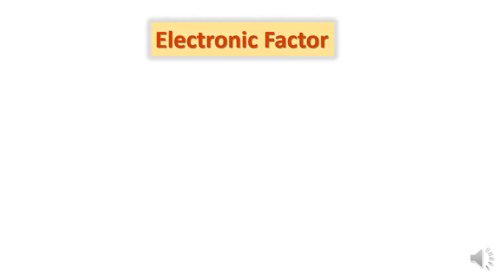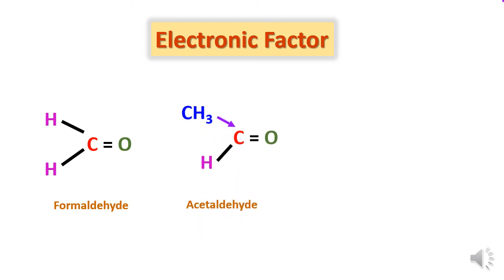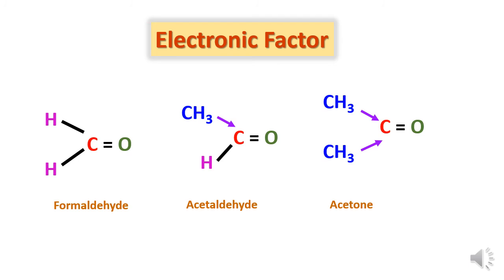There is another factor called the electronic factor. To study how the electronic factor affects the reactivity of the carbonyl group, we look at formaldehyde, acetaldehyde, and acetone. In formaldehyde, two hydrogen atoms are attached to the carbonyl carbon. In acetaldehyde, one methyl and one hydrogen group are attached. In acetone, two methyl groups are attached. The methyl group releases electron density towards the electron-deficient carbon of the carbonyl bond.